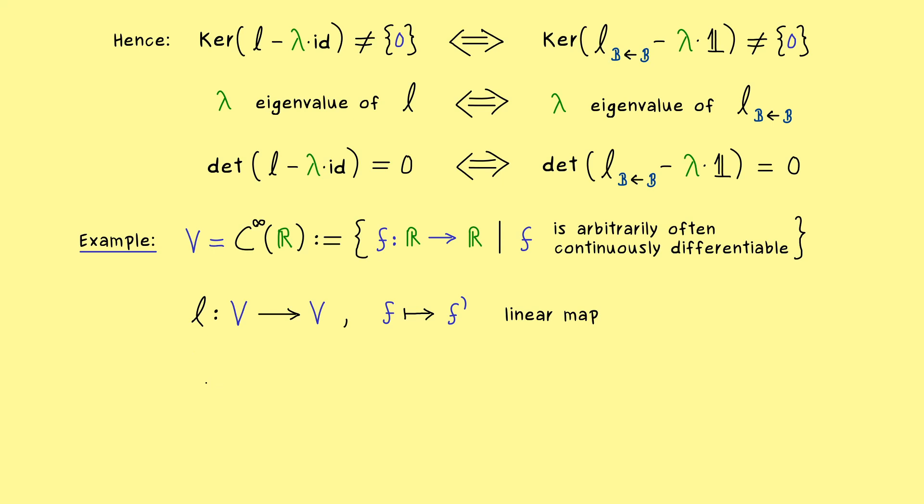However if we have more than polynomials we immediately find an eigenvector and an eigenvalue for this linear map. Indeed you might know that the exponential function is its own derivative. So here you just have to know that the exponential function sends x to e to the power x. And there a little bit of analysis knowledge tells you that the derivative is e to the power x again. Now this means this exponential function works as a vector here. And namely it's an eigenvector with respect to the eigenvalue 1.